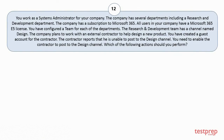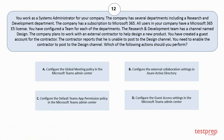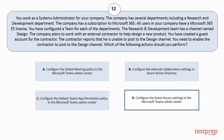Question 12. You work as a systems administrator for your company. The company has several departments including a research and development department. The company has a subscription to Microsoft 365. All users in your company have a Microsoft 365 v5 license. You have configured a team for each of the departments. The research and development team has a channel named Design. The company plans to work with an external contractor to help design a new product. You have created a guest account for the contractor. The contractor reports that he is unable to post to the Design channel. You need to enable the contractor to post to the Design channel. Which of the following actions should you perform? Your options are: A. Configure the Global Meeting Policy in the Microsoft Teams Admin Center. B. Configure the External Collaboration Settings in Azure Active Directory. C. Configure the Default Teams App Permission Policy in the Microsoft Teams Admin Center. D. Configure the Guest Access Settings in the Microsoft Teams Admin Center. The correct answer is Option D.